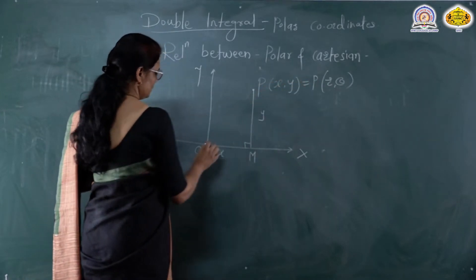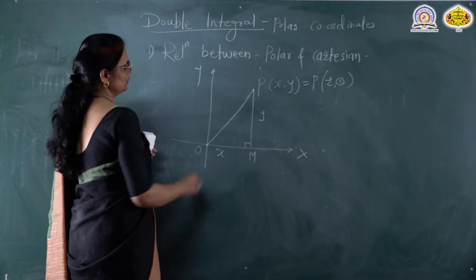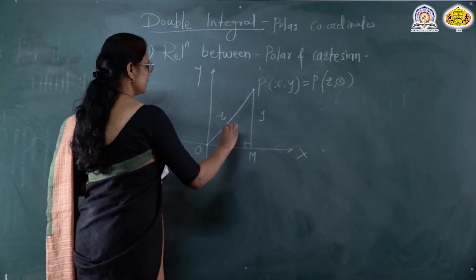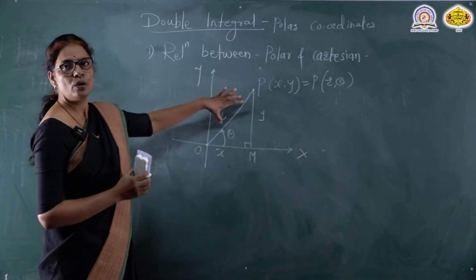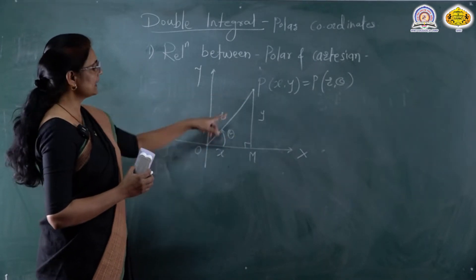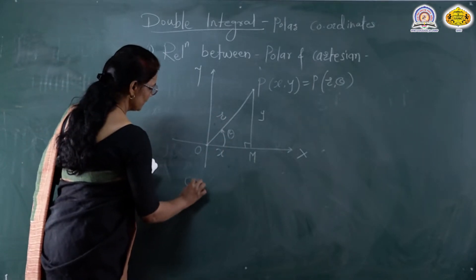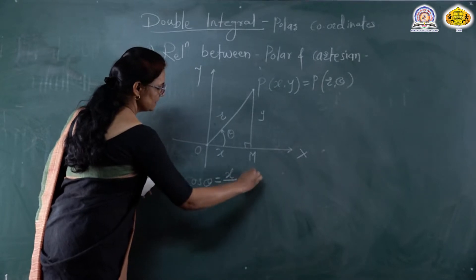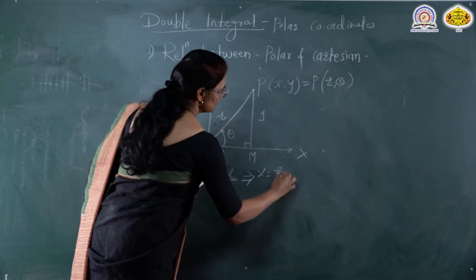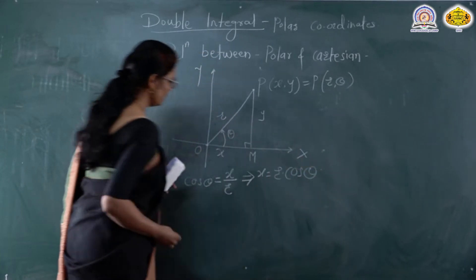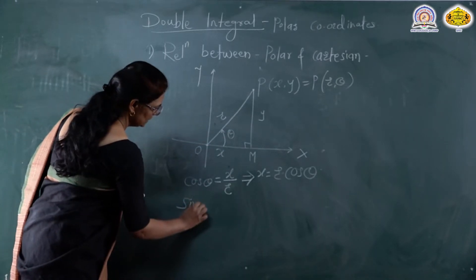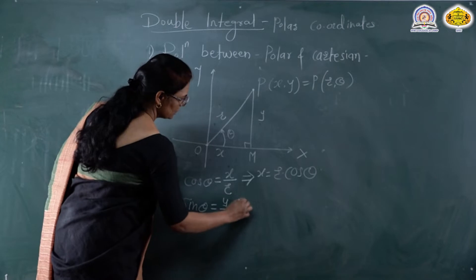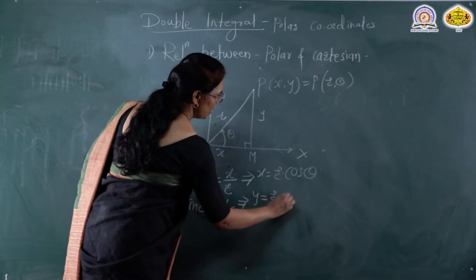The first polar coordinate is r, which is the distance OP from the origin. The second polar coordinate is theta, the angle between the positive x-axis and the ray OP. In this right triangle, cos theta equals the adjacent side over the hypotenuse, that is x over r. So we get x equals r cos theta. Also, sin theta equals the opposite side over the hypotenuse, that is y over r, so y equals r sin theta.